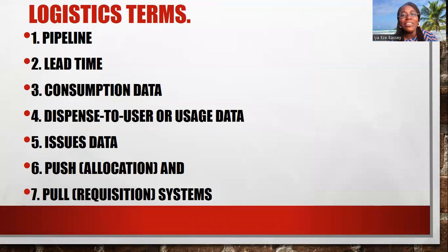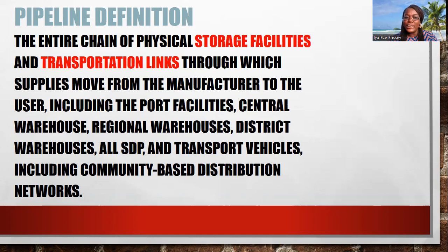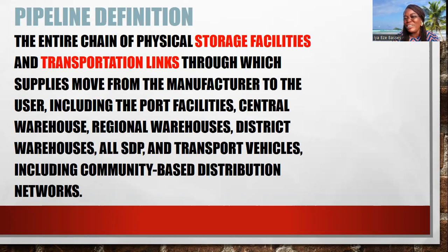Now let's look at key logistics terms. A pipeline refers to the entire chain of physical storage facilities and transportation links through which supplies move from the manufacturer to the user. This includes port facilities, the central warehouse, regional warehouses, district warehouses, all service delivery points, transport vehicles, and community-based distribution networks. In places vehicles cannot reach, you use bikes, motorcycles, or bicycles to carry goods down to the community.